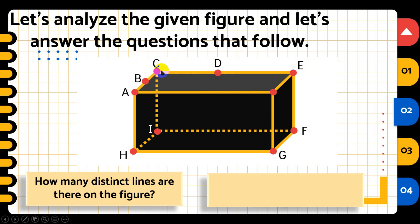The second line has point C, point D, and point E — three points on one line. Then we have point C and point I for the third line. Since a point along one segment has no name, those segments cannot form a distinct line. The fourth line is point E and point F. The fifth line connects point I and point F.